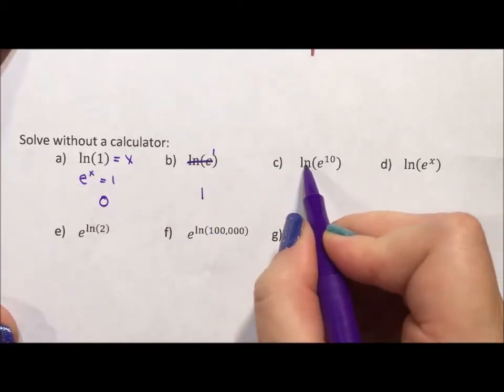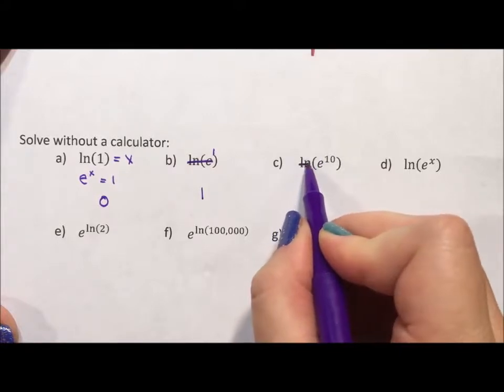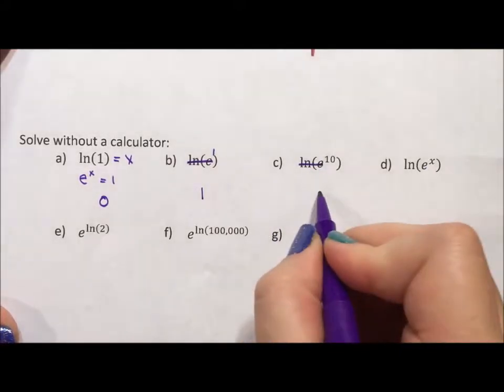These are still inverses, natural log of e to the 10. These guys undo each other, they're inverses, and we're left with 10.